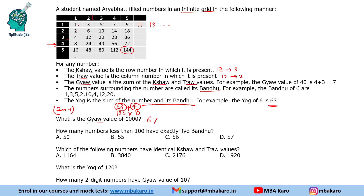The next question is: how many numbers less than 100 have exactly 5 Bandhu? A central number has 8 Bandhu. However, a number along the first row will have only 5 neighbors. For example, 3 has 5 neighbors, and 7 also has 5. So numbers in the first row or first column have exactly 5 Bandhu. Note that 1 has only 3 neighbors and must be excluded.